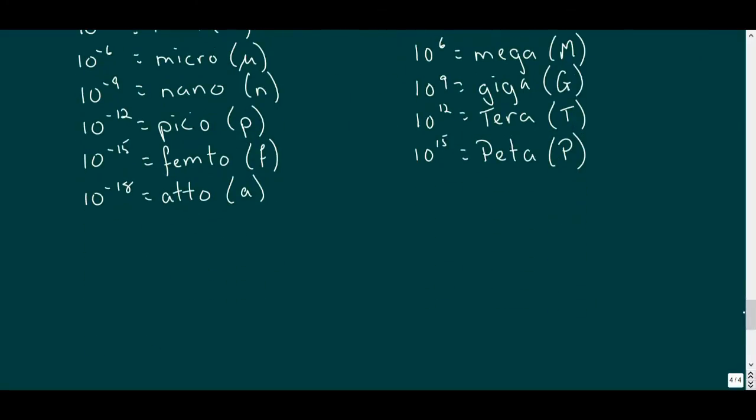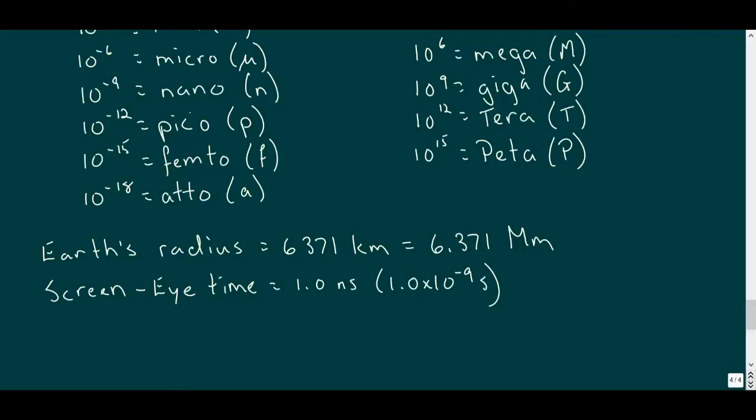In engineering notation, the Earth's radius, which is 6,371 kilometers, would be written as 6.371 megameters. And the time it takes the light from this video to reach your eye is pretty close to 1.0 nanoseconds, or 1 times 10 to the power of minus 9.